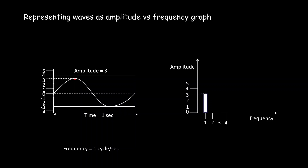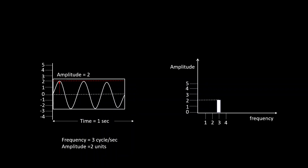Now in a similar fashion, let's see a few more examples. Here is a sine wave with a frequency of 3 cycles per second, meaning there are 3 complete cycles in 1 second. The height of this sine wave is 2 units, so the amplitude is 2 units. To represent this on the amplitude-frequency graph, at a frequency of 3 units the amplitude is 2 units.